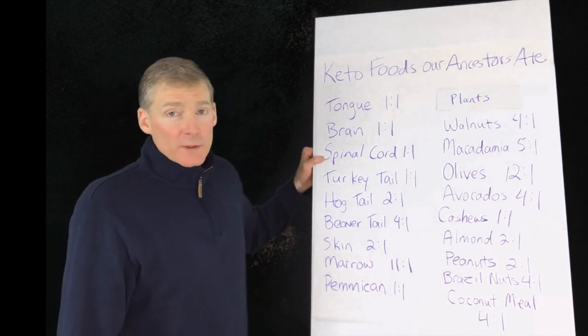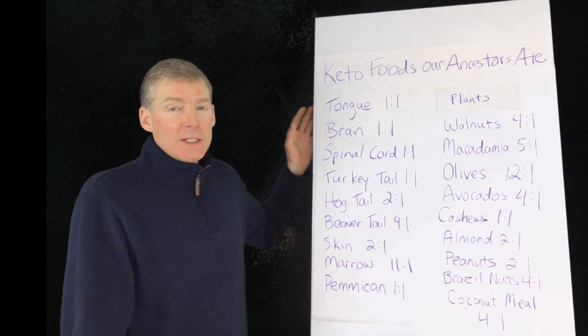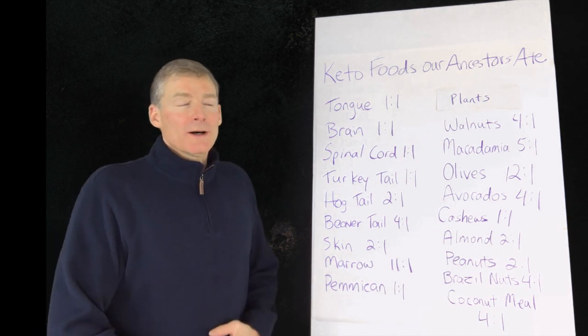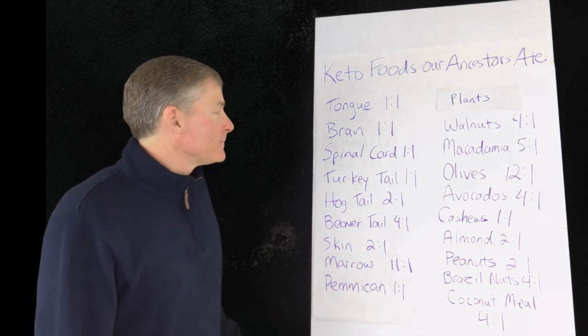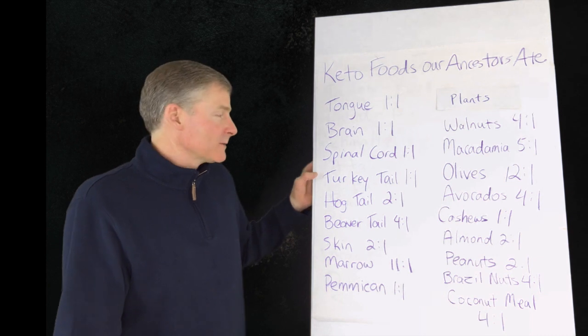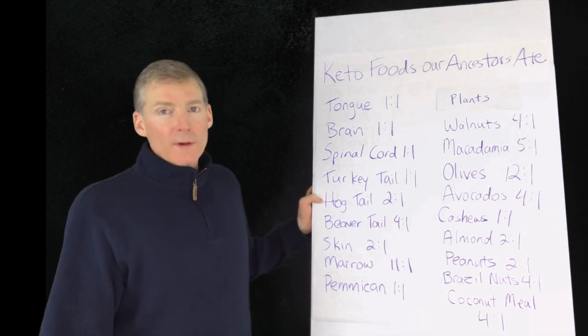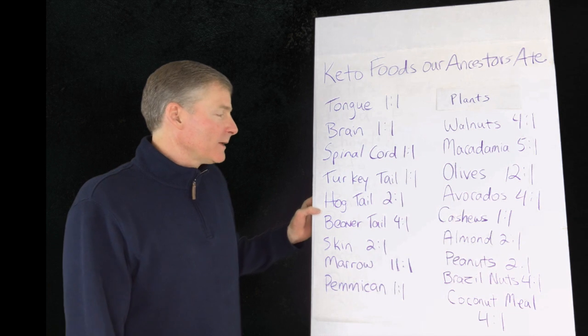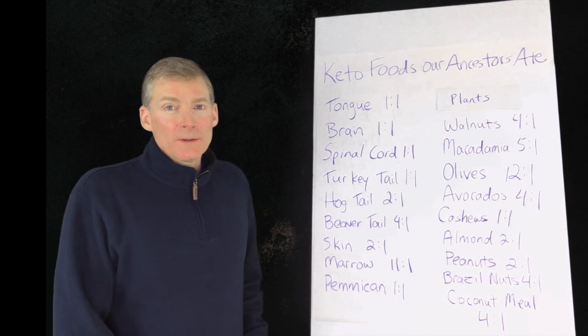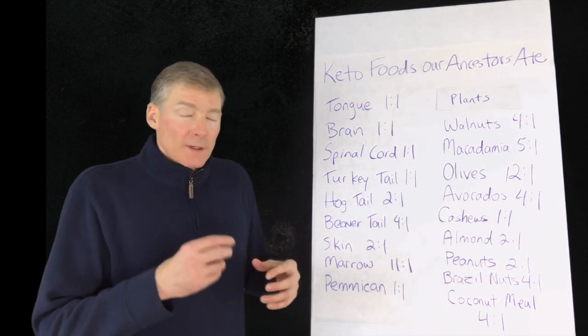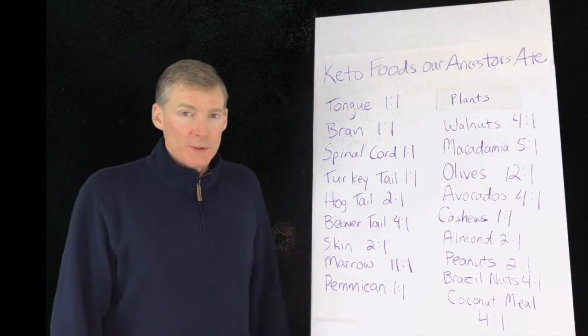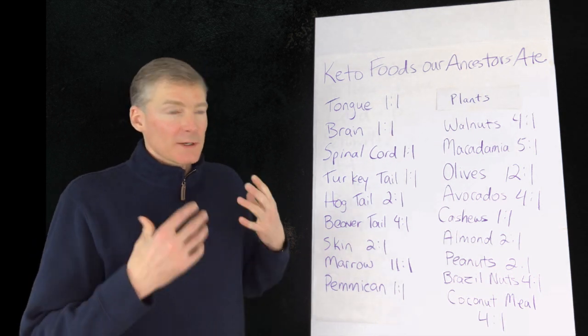Brain and spinal cord are one-to-one, so they could be ketogenic if you had just gotten done fasting or if your body is fat adapted. Turkey tail is one-to-one, wild boar tail is two-to-one, beaver tail is four-to-one, the skin is two-to-one. I certainly picked through chicken and grabbed the skin and left the lean meat alone because the skin is so much more nourishing, and our bodies certainly love the fat.